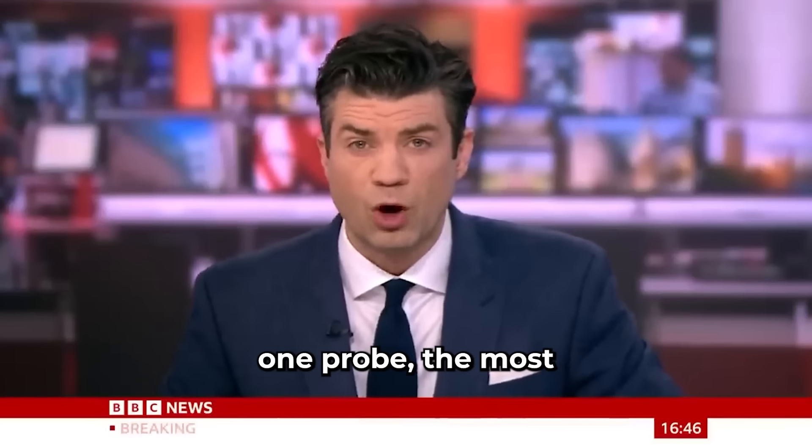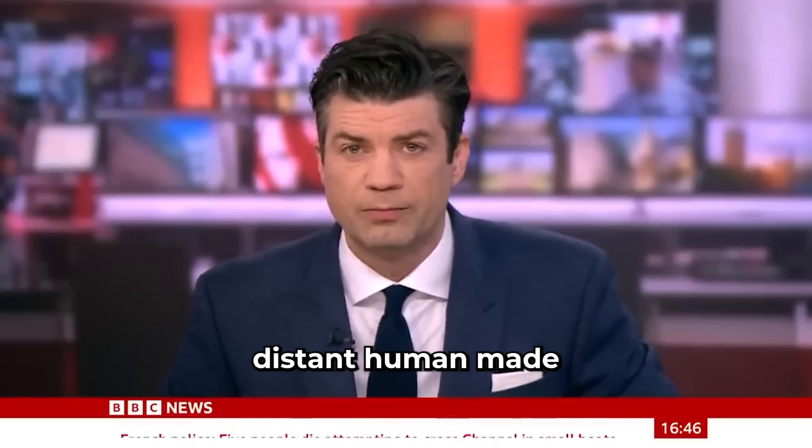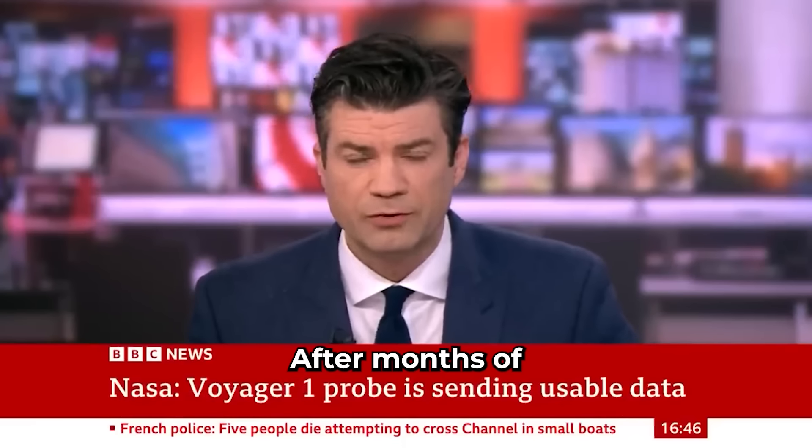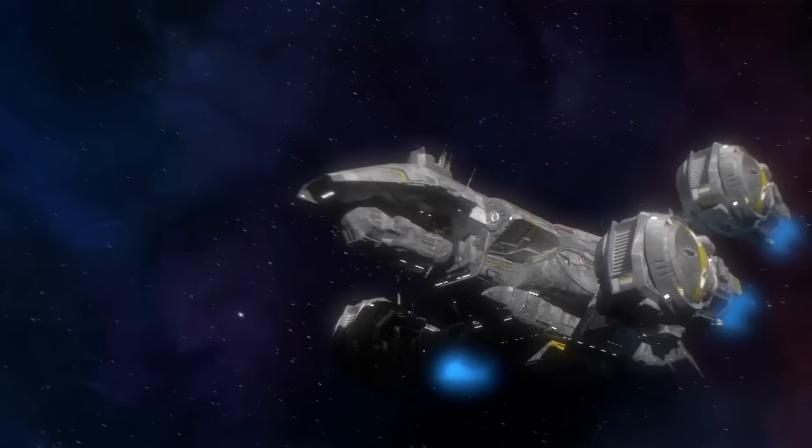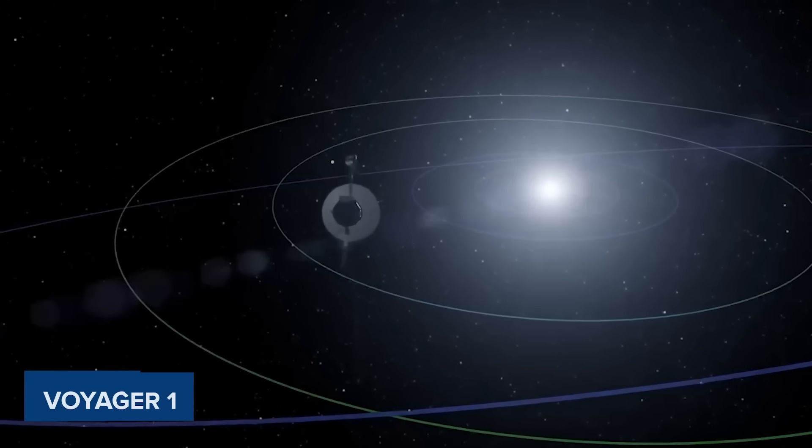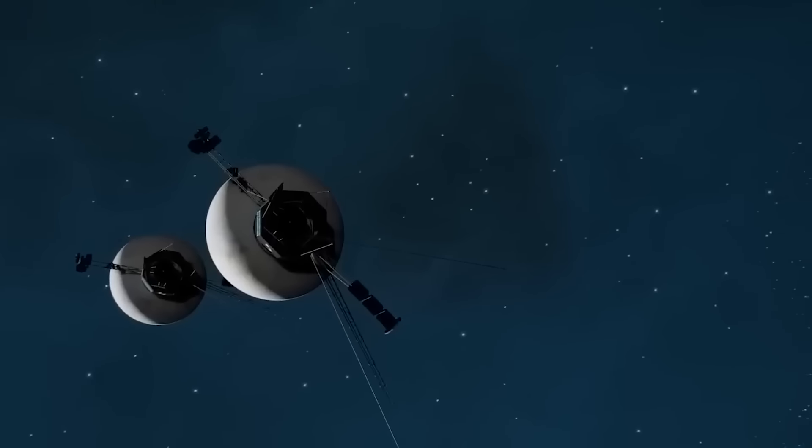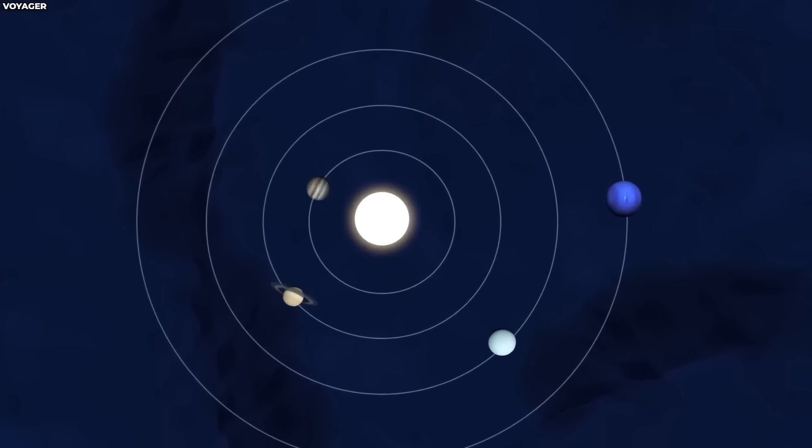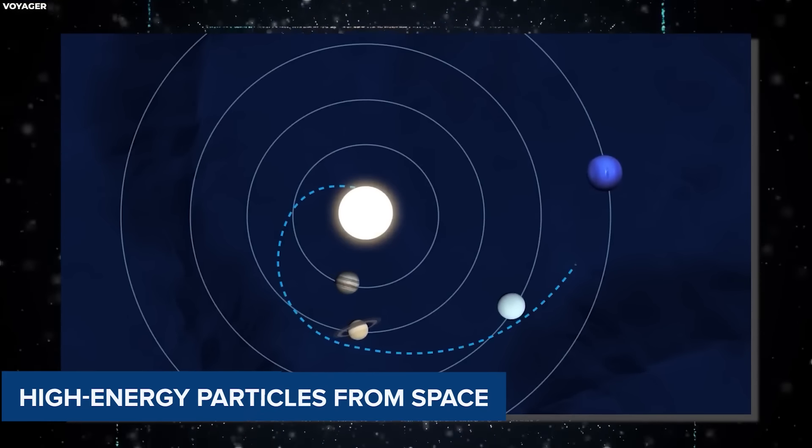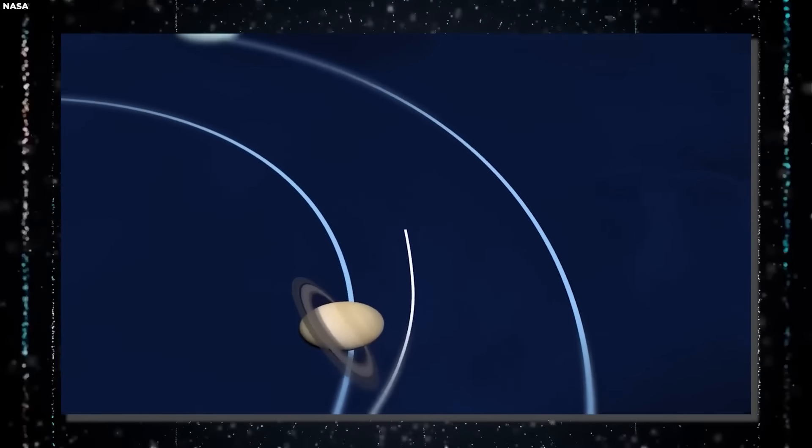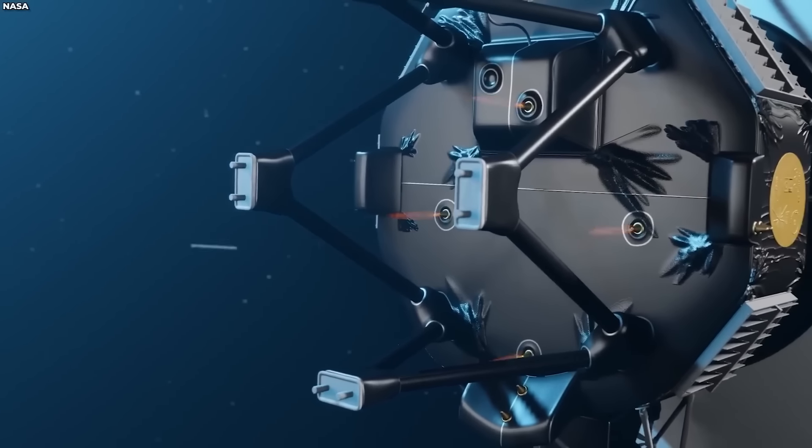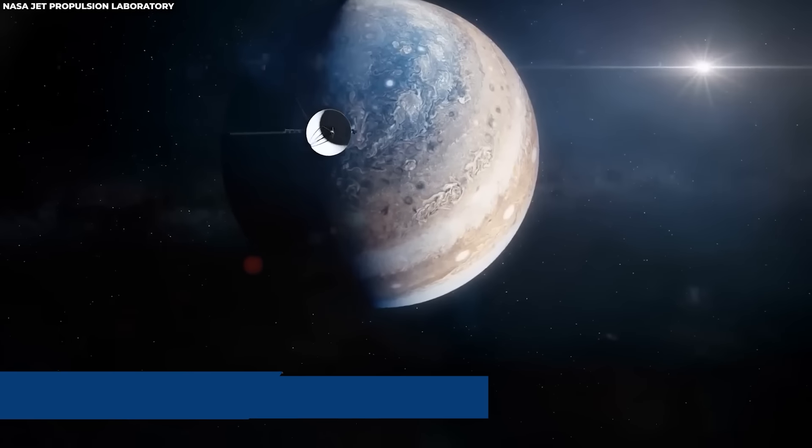NASA says its Voyager 1 probe, the most distant human-made object in the universe, is sending usable information to Earth again after months of spouting gibberish. It has picked up a strange hum from beyond our solar system and noticed odd changes in cosmic rays, which can affect electronics and the environment. Shockingly, Voyager's signal is still strong, suggesting its antenna is still pointing at Earth.